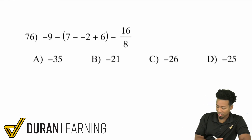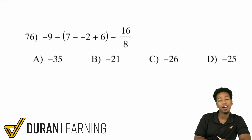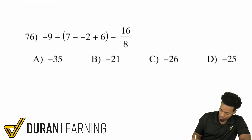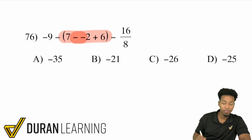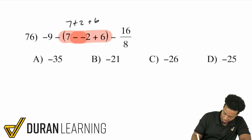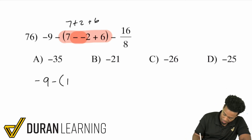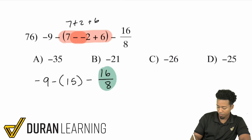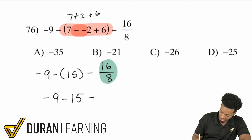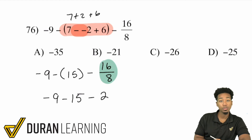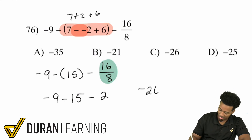Nothing is changing — if you can do three steps you can do four or five steps, no problem. Next: I identify a group with a double negative inside, so minus negative becomes plus. 7 plus 2 plus 6 is 15. We then have negative 9 minus 15, and we subtract 16 over 8. A fraction is division: 16 divided by 8 is 2. So we have negative 9 minus 15 minus 2. Negative 9 minus 15 is negative 24, and negative 24 minus 2 is negative 26.